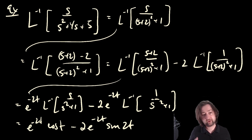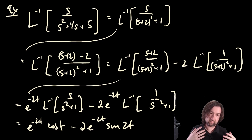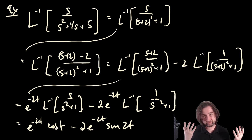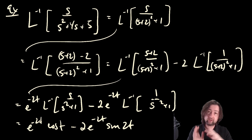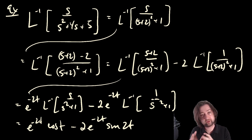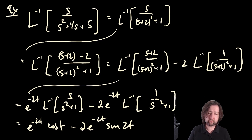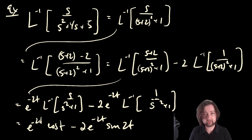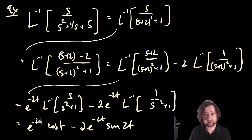That's an example of how the first shifting theorem works. Practice is the best way to get the idea of either taking an exponential and turning it into a shift — as we do for the forward Laplace transform — or taking the shift out and encoding it in an exponential, as we do for the inverse Laplace transform. The same ideas will be present when we talk about the second shifting theorem, which involves shifting in the time domain rather than the Laplace domain, and there we'll use something called the unit step or Heaviside function. That'll be the subject of the next video.